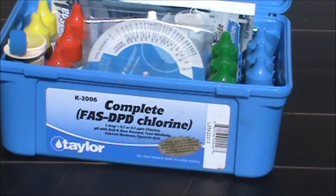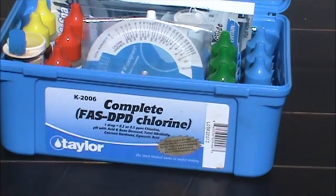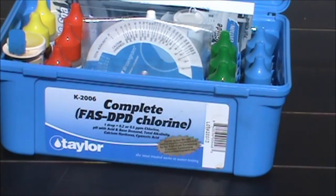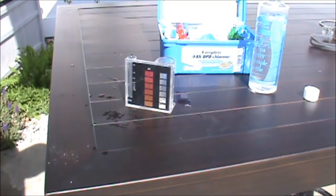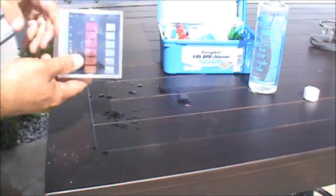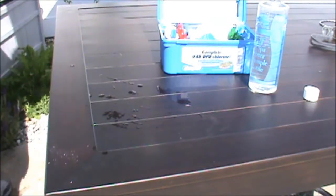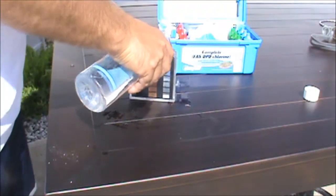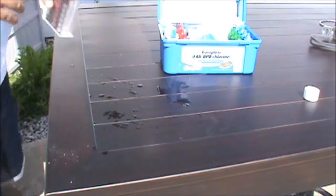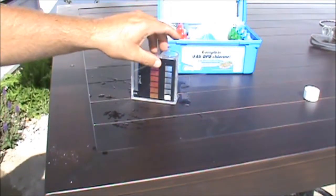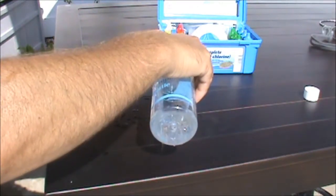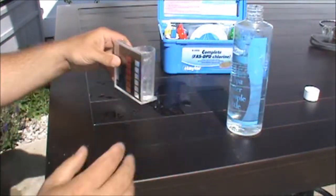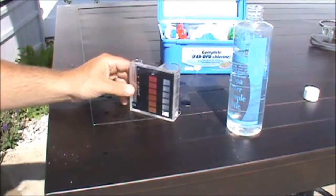So to do our testing today we're going to be using the Taylor K-2006 complete FAS-DPD chlorine test kit. Next test we're going to do - we're going to take our free chlorine sample, dump that out. We're going to rinse out our comparator and we're going to be running a pH test. So we're going to take the large comparator and fill it up to 44 milliliters.